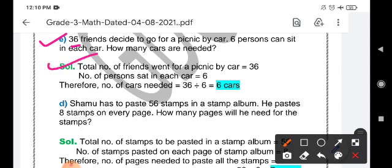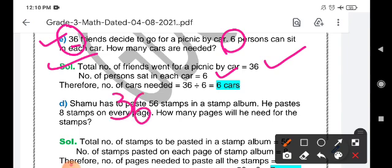So the total number of friends that went for a picnic by car is 36. How many persons can sit in one car is 6. So how many cars we need is, we will divide 36 by the number 6. 6 times 6 are 36.